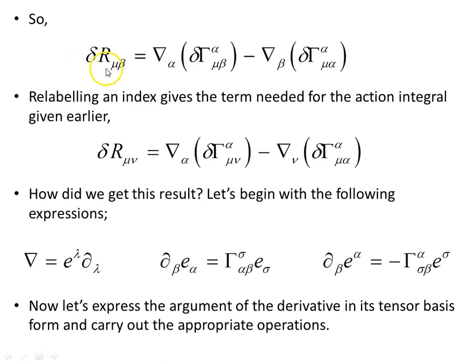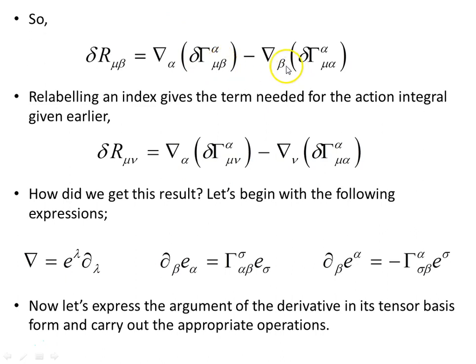So the variation of the Ricci tensor is the difference of these two covariant derivatives, as seen on the previous page. Relabelling an index — replacing beta with nu — gives the term needed for the action integral we were using in earlier slides. This is the expression we use given our choice of indices from the beginning of the derivation.